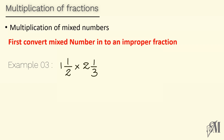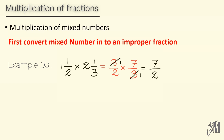Now look at this example where both parts are mixed numbers. Convert both into improper fractions: it becomes 3 over 2 multiplied by 7 over 3. The 3s can be cancelled. Then 1 into 7 is 7 and 2 into 1 is 2, giving 7 over 2. Since 7 over 2 is an improper fraction, we must convert it to a mixed number. Therefore the final answer becomes 3 and 1 over 2.